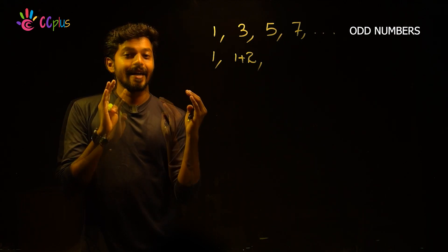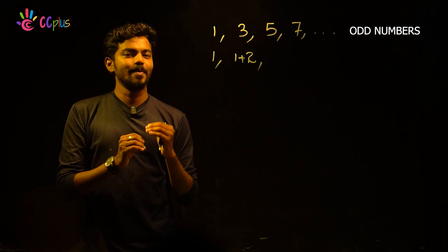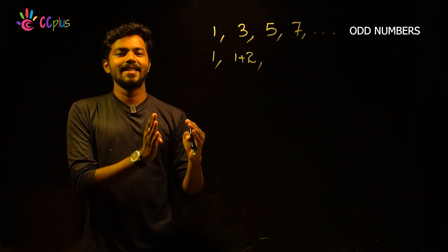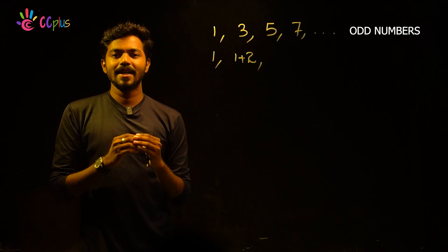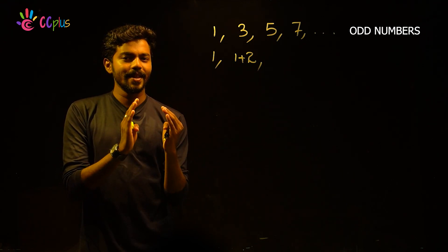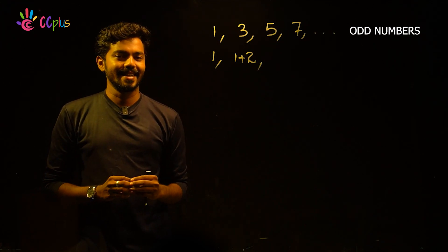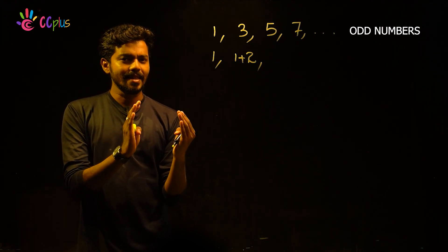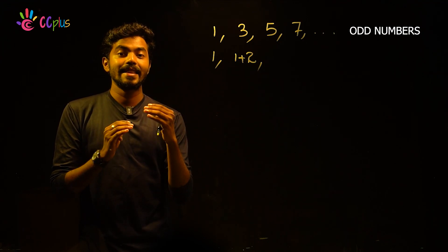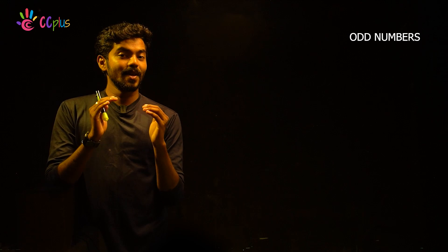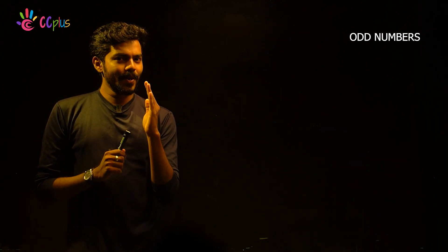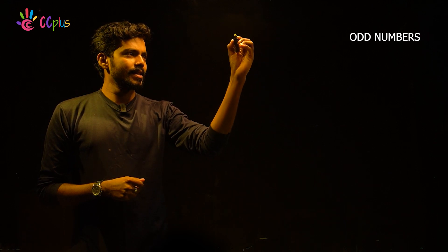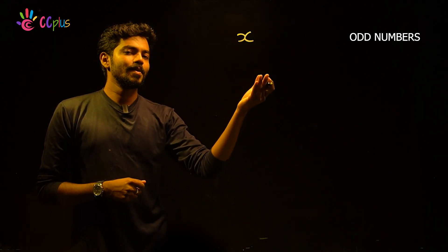How do we express odd numbers generally? Odd numbers differ by 2. So we can express consecutive odd numbers using a variable. We have odd numbers like 3 is odd, 5 is odd — they are all separated by 2.